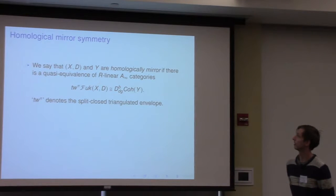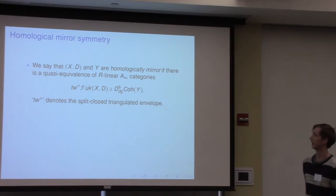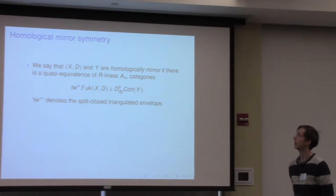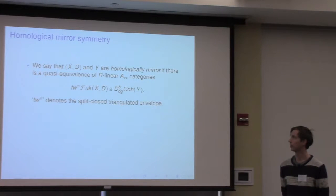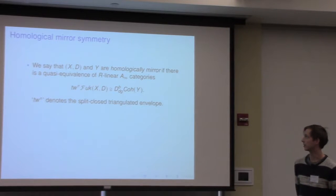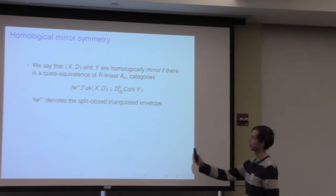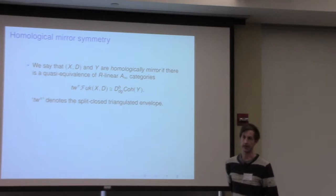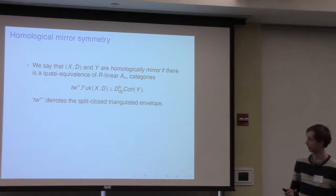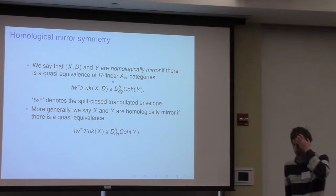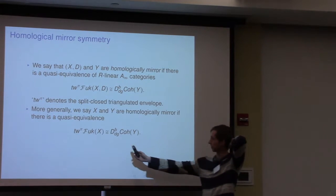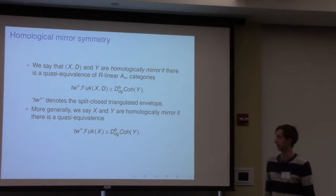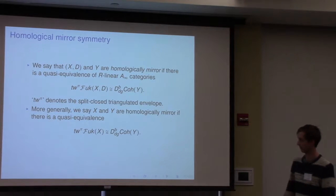The category we're going to look at on the B-model is the DG enhancement of the bounded derived category of coherent sheaves on Y, which we regard as an A∞ category. Here's what we're going to declare homological mirror symmetry to mean: we say X, D, and Y are homologically mirror if there's a quasi-equivalence of R-linear A∞ categories between the split-closed triangulated envelope of the Fukaya category and the DG enhancement of D^b Coh(Y). More generally, one might hope to prove that X and Y are homologically mirror using the absolute Fukaya category, though that's technically more difficult.